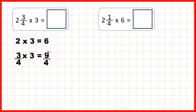So we can't write 6 and 9 quarters as our answer, because we can't have an improper fraction in a mixed number. We can't have a fraction where the numerator is larger than the denominator if we have a mixed number.